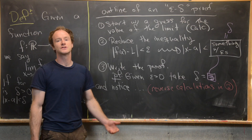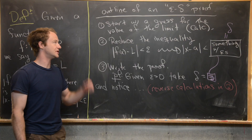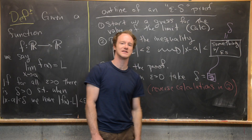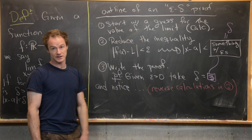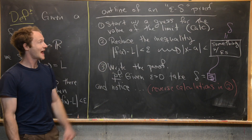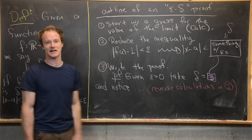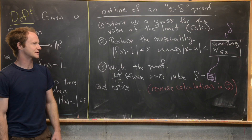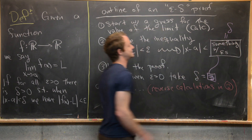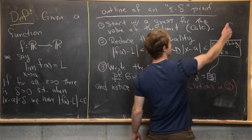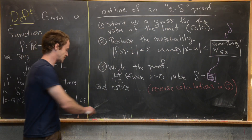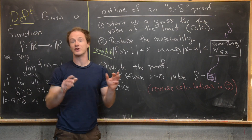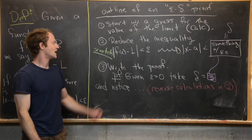Let's look at the outline of an epsilon-delta proof. First, start with a guess for the value of the limit — you should have a feel for this from Calculus 1 or 2. Next, reduce the inequality |f(x) − L| < epsilon until it looks like |x − a| < something, where that something depends on epsilon and will become your delta. This second step is scratch work — don't include it in your final write-up. Then, write the proof.